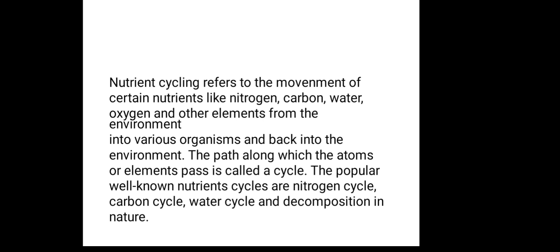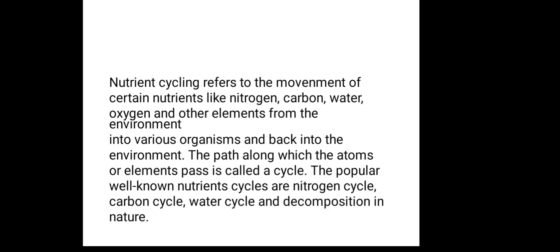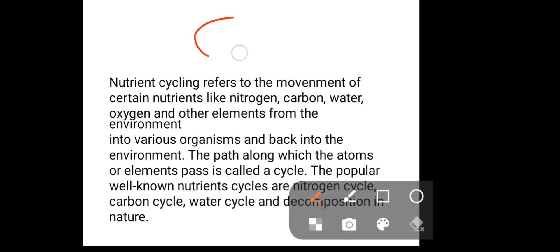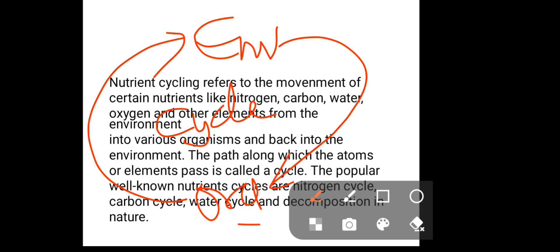Nutrient cycling refers to the movement of certain nutrients — like nitrogen, carbon, water, oxygen, and other elements — from the environment into various organisms and then back into the environment. Nutrients move from the environment into the organism and then from the organism back into the environment, and this is called a cycle. Depending on whatever nutrient is being cycled, we can call it different names — nitrogen cycle if what is being cycled is nitrogen.